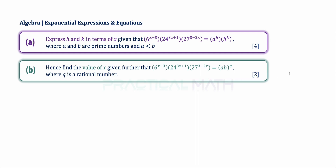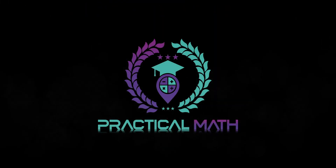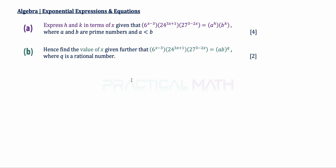You might want to pause this video to give this question a try, and when you're ready, keep watching. In part A, we have to express h and k in terms of x, given that the left-hand side equals A to the power of h multiplied by B to the power of k, where both A and B are prime numbers.